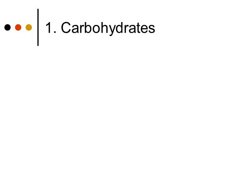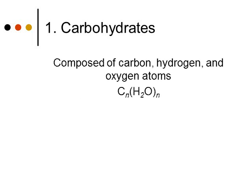Carbohydrates are composed of carbon, hydrogen, and oxygen atoms. Generally, they have the molecular formula CnH2On, where n can be any number. Usually for carbohydrates, it's a 5 or a 6, so you have C5H10O5 or C6H12O6.